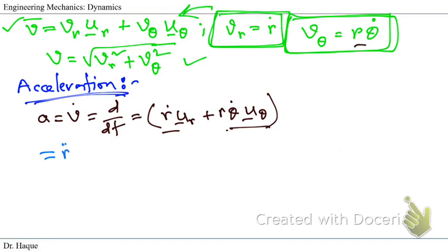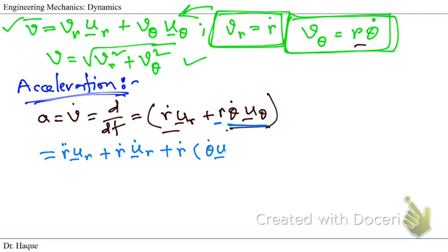We get the double derivative of r, unchanged part u_r, plus the unchanged r-dot part times the derivative of u_r. For the second part, we separate r, so r-prime times unchanged θ-dot times u_θ, plus r times the unchanged part. Now we apply the chain rule derivative on these two terms, so we have θ-dot double-dot times unchanged u_θ, plus...